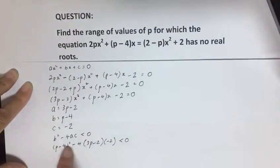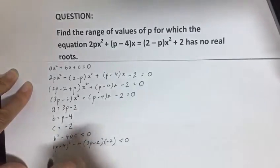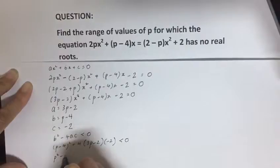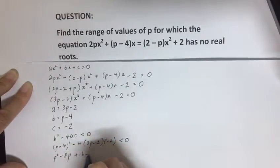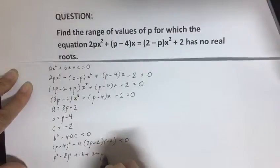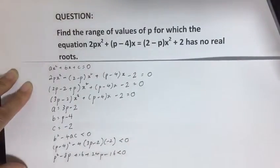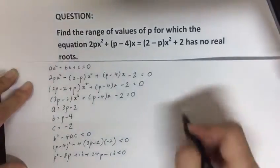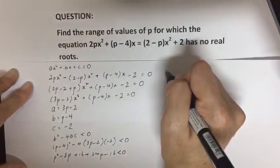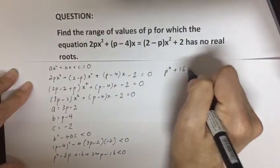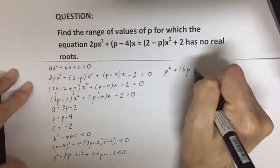So expanding this part, you get p² - 8p + 16 + 24p - 16 is less than 0. And simplifying this further, you get p² + 16p is less than 0.